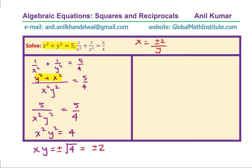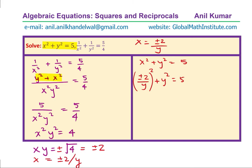We substitute this value into the first equation x² + y² = 5. Instead of x, we write ±2/y, and squaring gives a positive number. So we get 4/y² + y² = 5. Multiplying through by y², we get 4 + y⁴ = 5y², which rearranges to y⁴ - 5y² + 4 = 0.